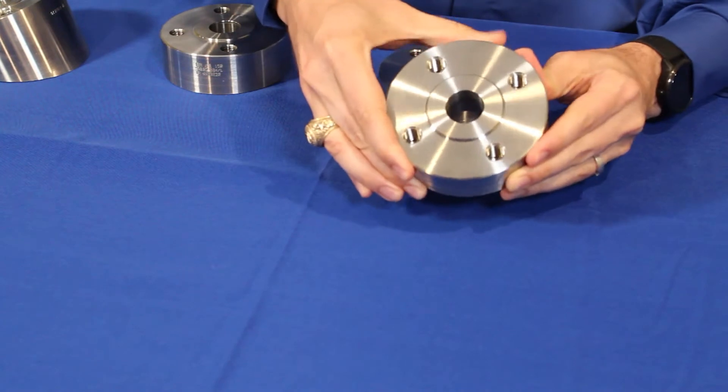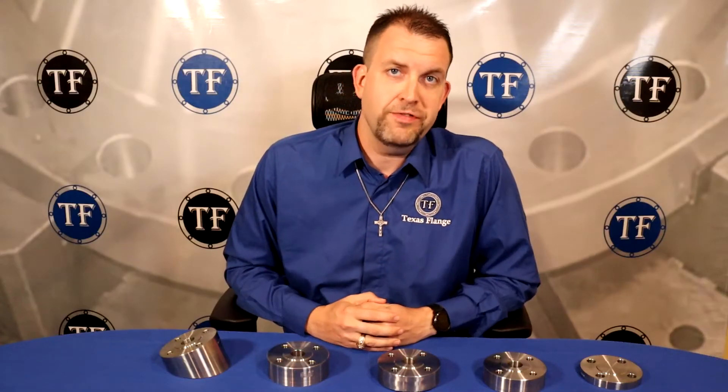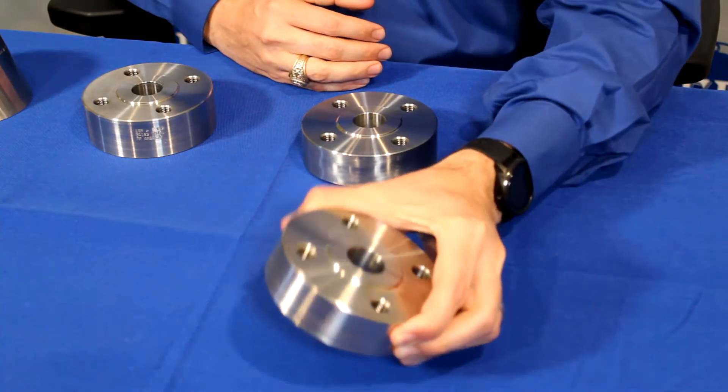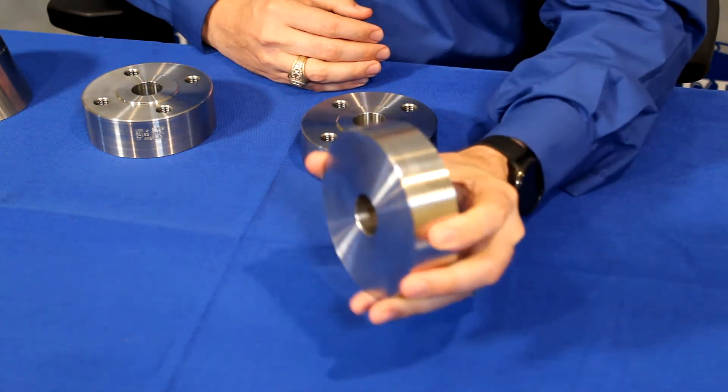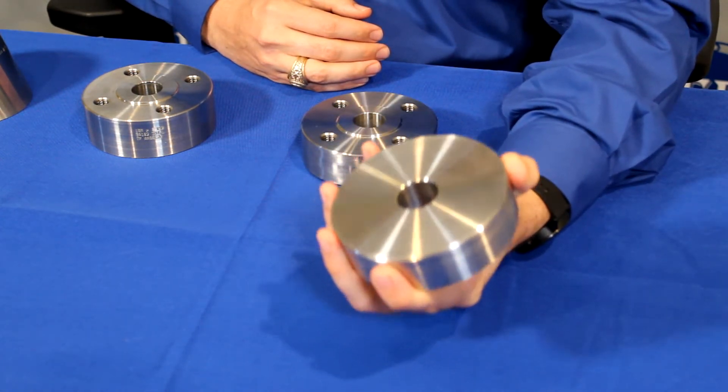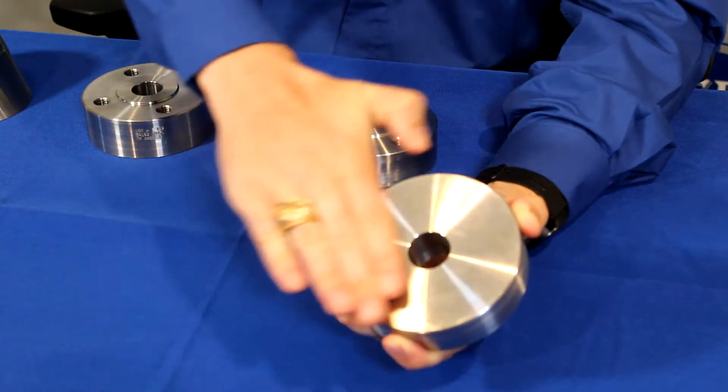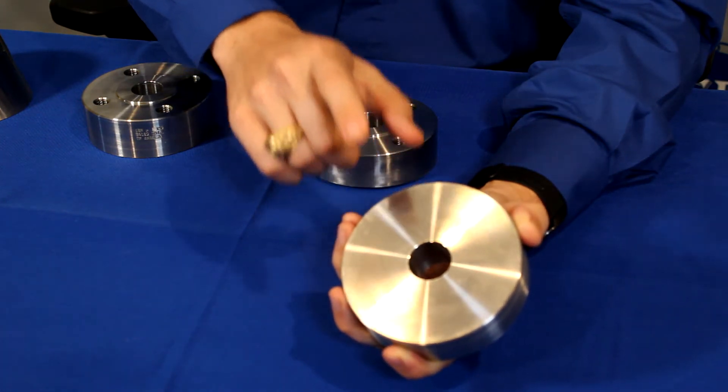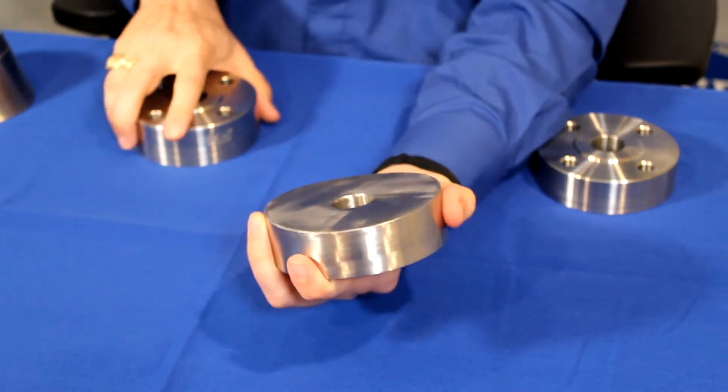Of the different mounting styles, the flat bottom is the most straightforward and most common. As the name implies, it has a flat bottom. You can use this on either flat vessels or very large ones, where if there's a very large curvature sometimes this doesn't actually need to have a radius cut into it. The flat bottom might suffice.